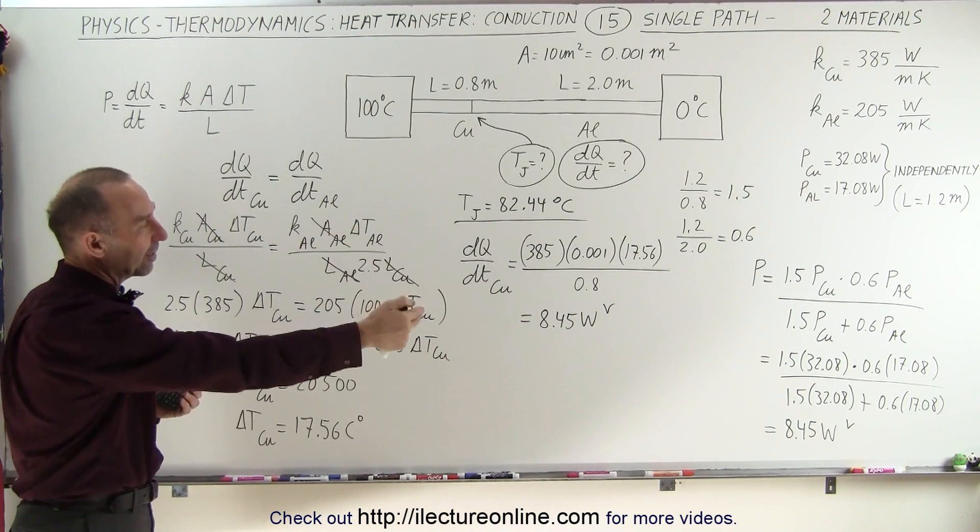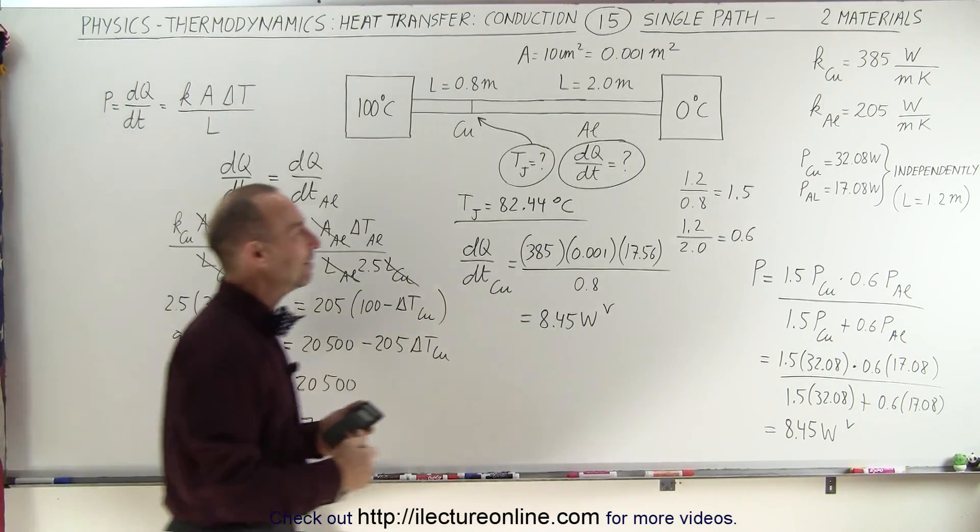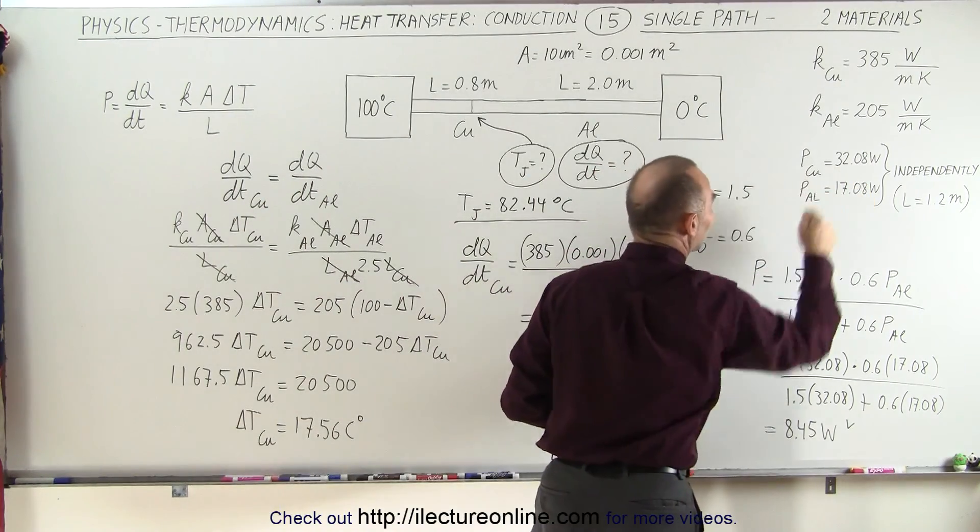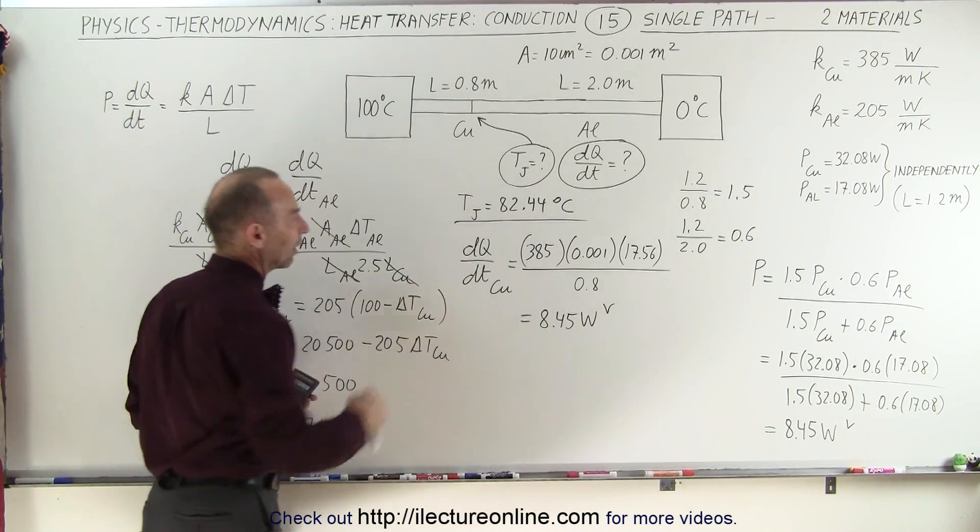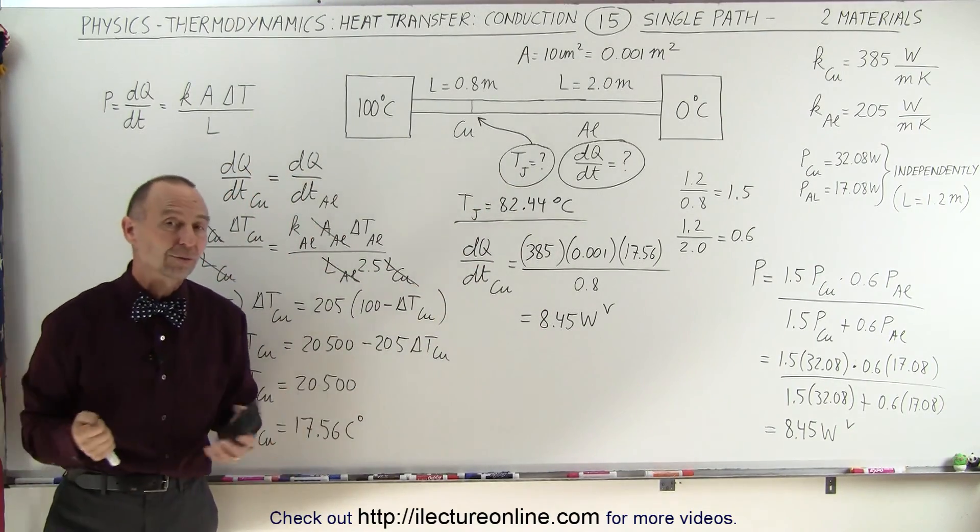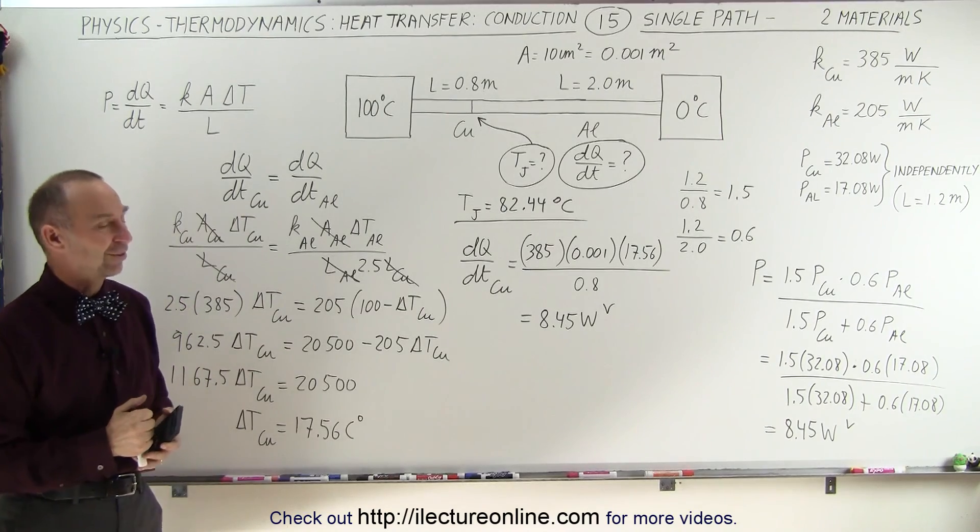So you can see that we have a nice, quick method to do it if we know what the base comparisons are. If we don't, we can do it the traditional way, find the junction temperature first, and then solve for the heat transfer to one of the two sections. And that's how it's done.